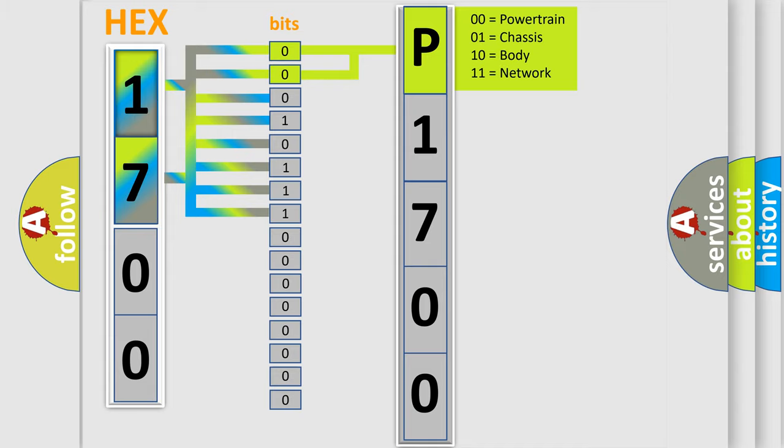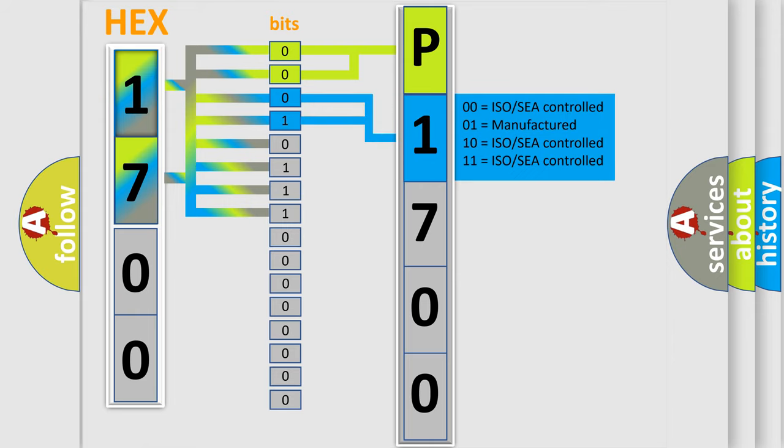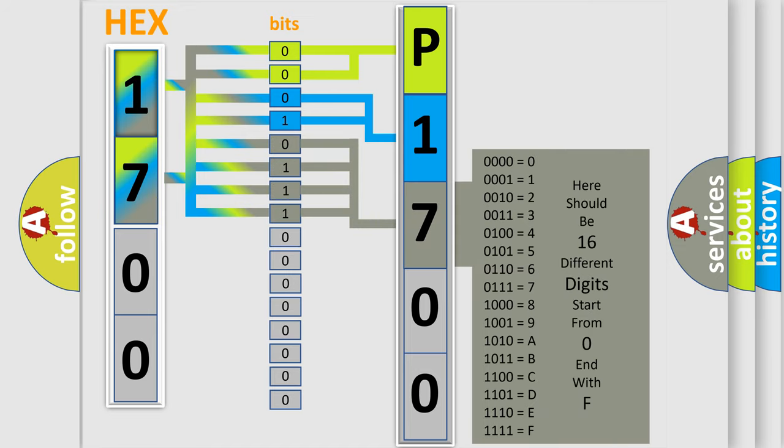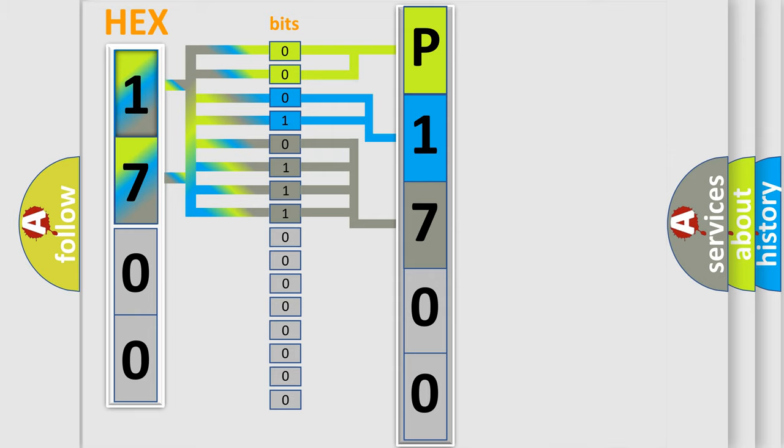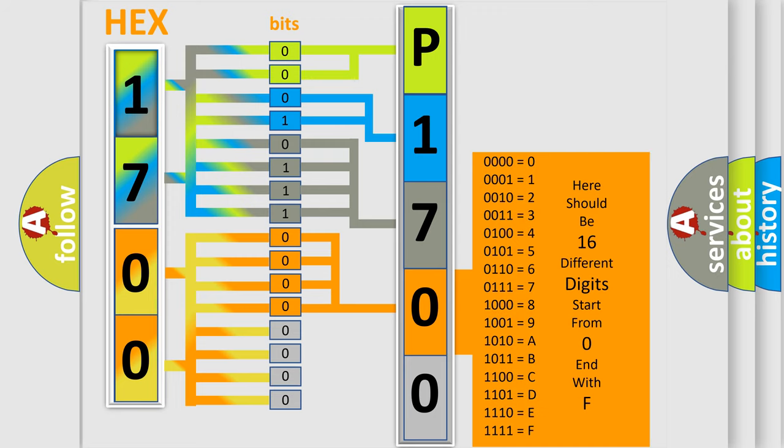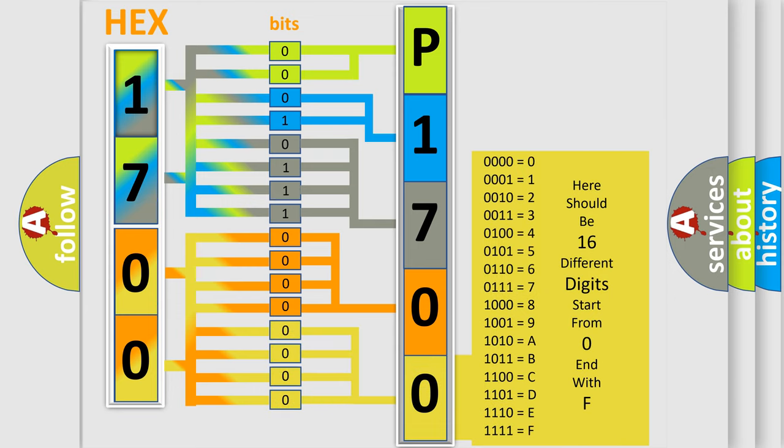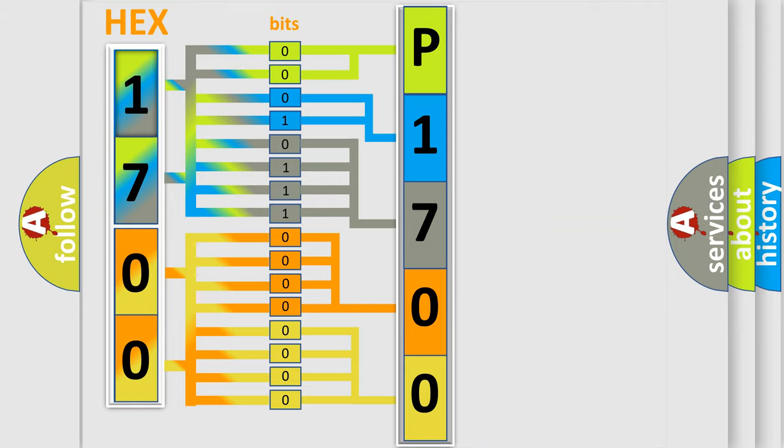The next two bits determine the second character. The last four bits of the first byte define the third character of the code. The second byte is composed of eight bits. The first four bits determine the fourth character, and the last four bits define the fifth character. A single byte conceals 256 possible combinations. We now know how the diagnostic tool translates the received information into a more comprehensible format.